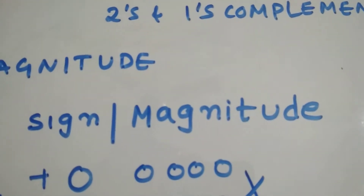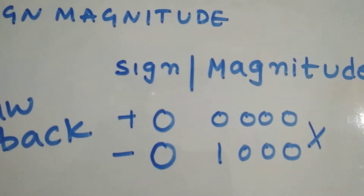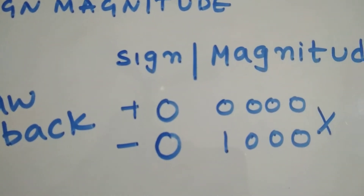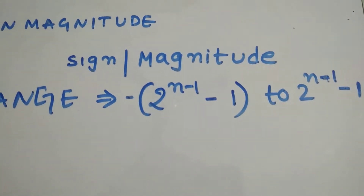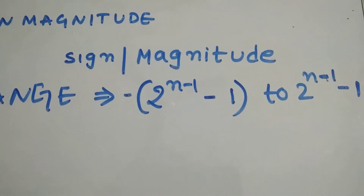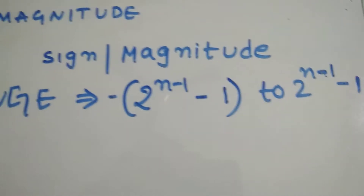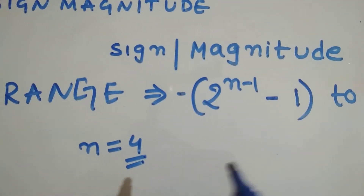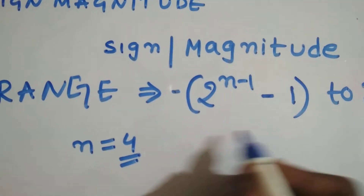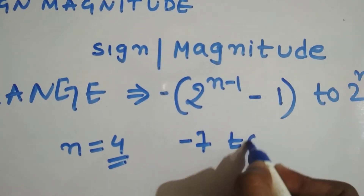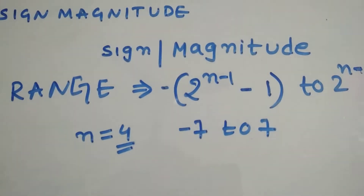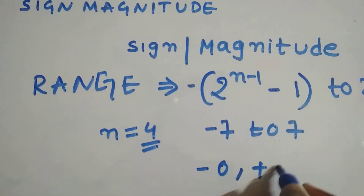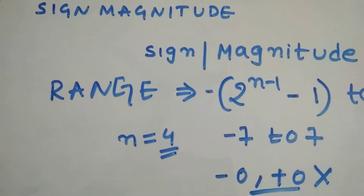What's the range of signed magnitude form? The range is minus (2 power n minus 1 minus 1) to (2 power n minus 1 minus 1). If n equals 4, that means 4 bits — so the range is 2 to the power 3 minus 1, giving us minus 7 to 7. So we have the problem that minus 0 and plus 0 cannot both be used.